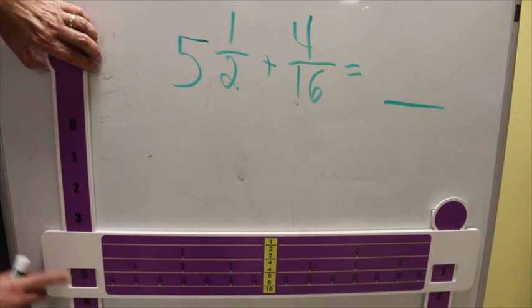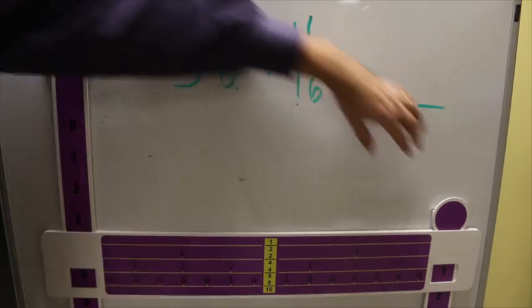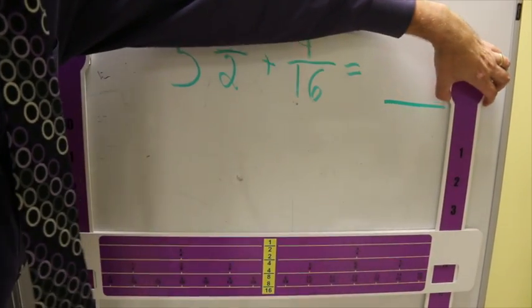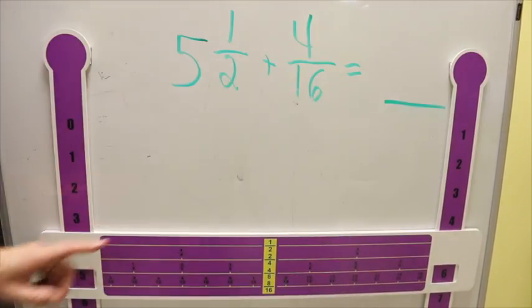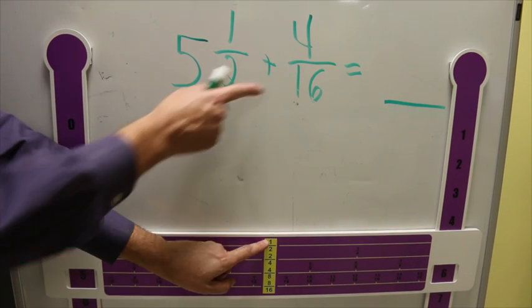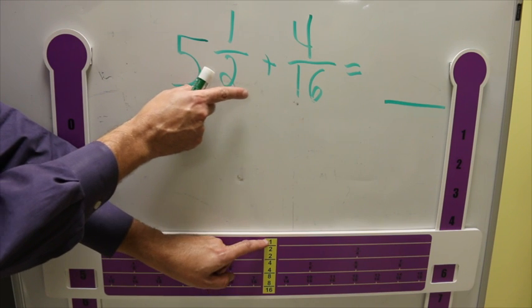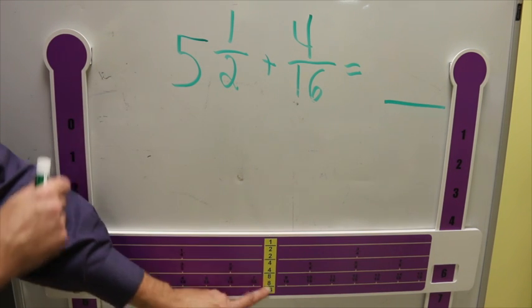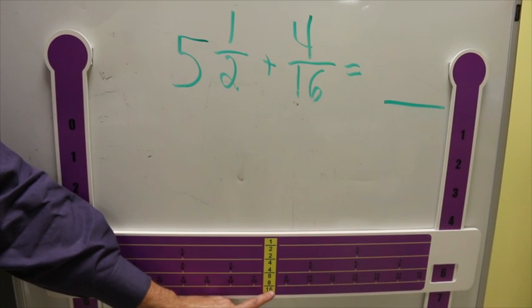Establish the whole numbers. 5. And the next number is 6. 5 and 1 half. And we're going to add 4 sixteenths. Because 8 sixteenths and 1 half are equivalent fractions you can drop straight down. Then add 4.